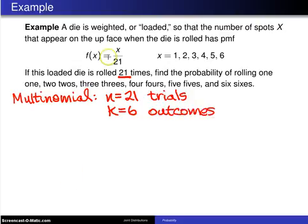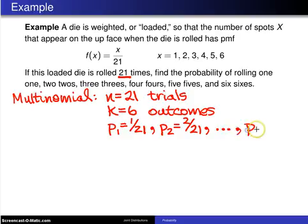Now the probabilities of the various outcomes: we're going to let p1 be the probability of rolling a 1 on an individual trial and that is 1 over 21. p2 is the probability of rolling a 2 on an individual trial and that is 2 over 21. p3 is 3 over 21, et cetera, all the way up to p6 which is 6 over 21.